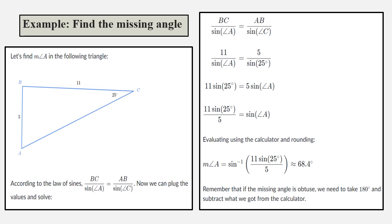Evaluating using the calculator and rounding, angle A = sin⁻¹((11 sin 25°)/5) = 68.4°. Remember that if the missing angle is obtuse, we need to take 180° and subtract what we get from the calculator.